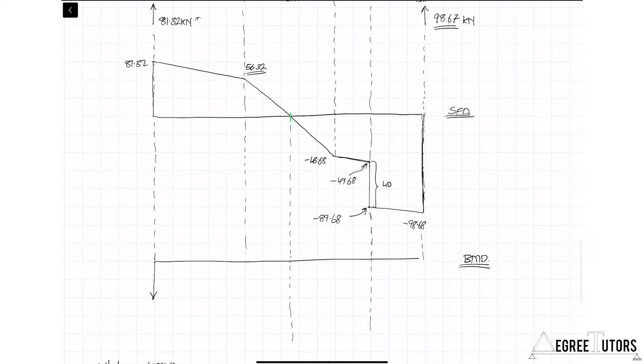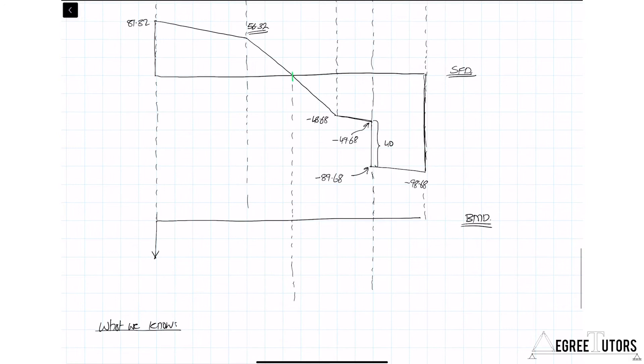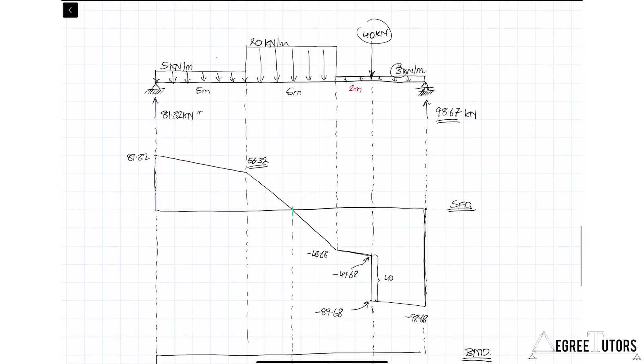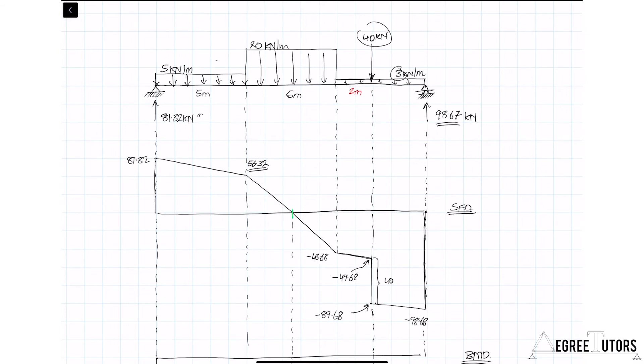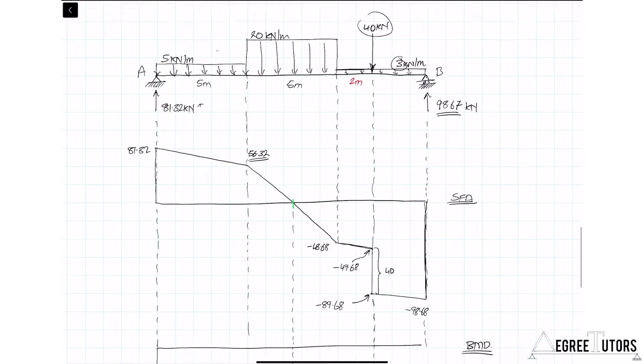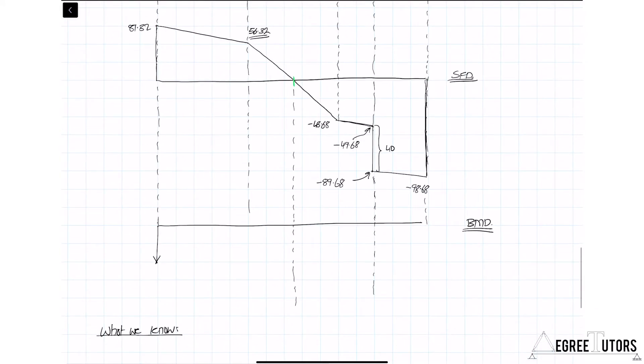The other thing we know is where the shear force is zero. We've worked that out, and that tells us where the bending moment is a maximum. We know that we've got two pinned ends—a pin here at point A and a pin at the far end at point B. We know the bending moment is going to be zero at a pin. We also know we have a point load coming on here, and a point load leads to a sudden change in the slope of a bending moment diagram.